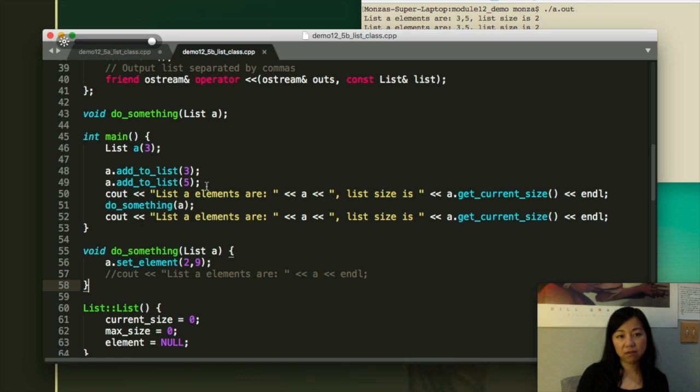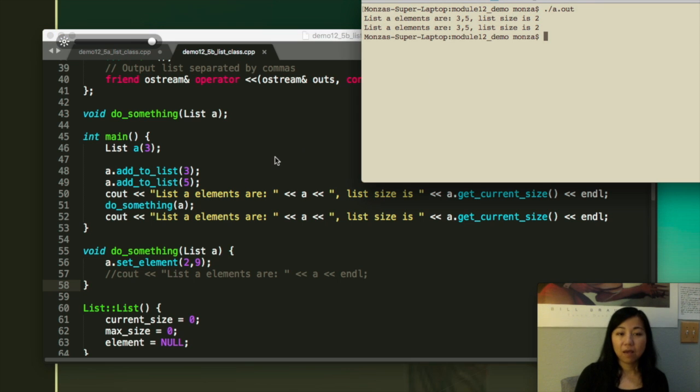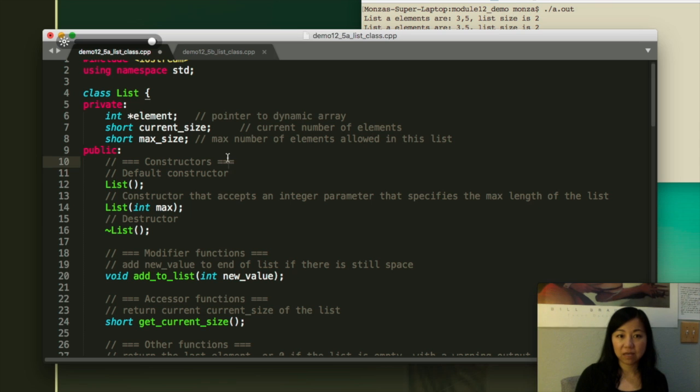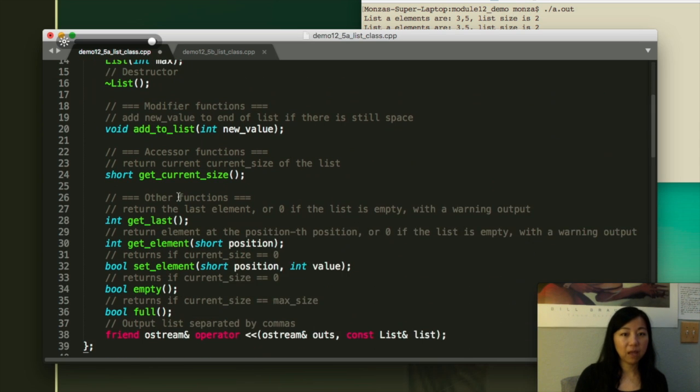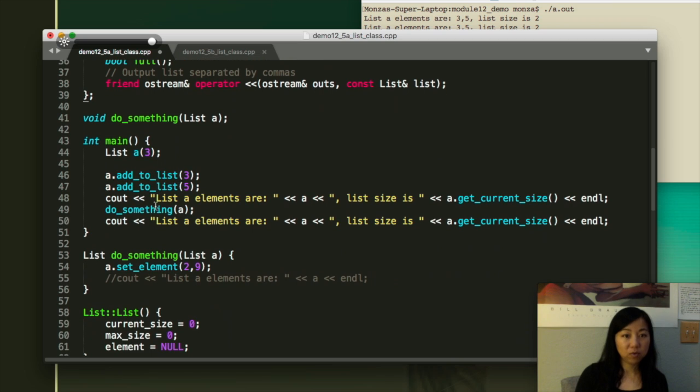So how do we do this? Maybe I need to talk about the code in the main function. So we declare a list a of three maximum number of elements. We add to list the value three and then the value five, and then we print out a because we overloaded the insertion operator. And that's why we can print out the list this way. And then we do something and see if the list a has been changed. And so we prove that it didn't. But if we don't have the copy constructor, this is actually the code that has no copy constructor.